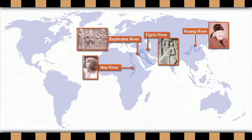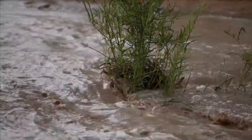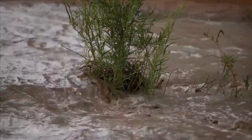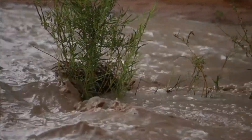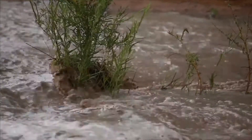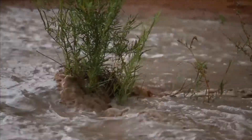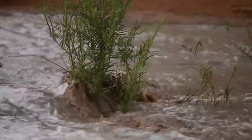Yearly floods of these rivers provided the early civilizations with water and silt. Silt is like a natural fertilizer, bringing new minerals to enrich the soil.